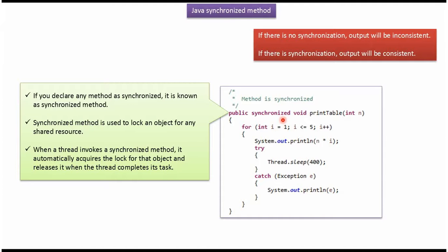Other threads have to wait till the thread finishes the execution. Suppose there are three threads: thread1, thread2, and thread3. If thread1 executes this printable method, then thread2 and thread3 have to wait till thread1 finishes. When a thread invokes a synchronized method, the thread automatically acquires a lock for that object. And once execution is over, the thread releases the lock.